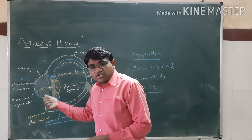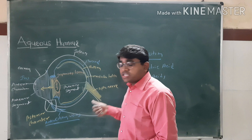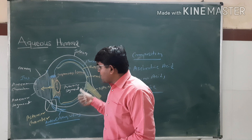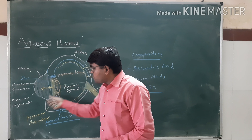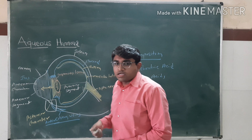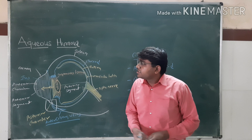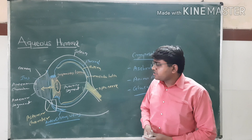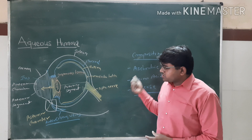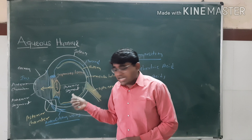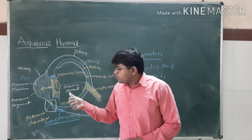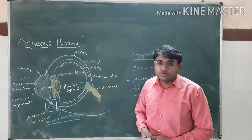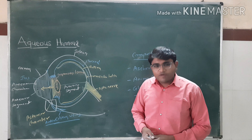The cornea is an avascular structure and the lens is also an avascular structure, so the nourishment of the cornea and lens is done by the aqueous humor. The topic of aqueous humor is now completed. You must remember its clinical condition — glaucoma — which is very common among eye problems. Thank you very much.